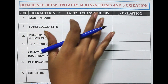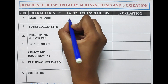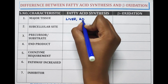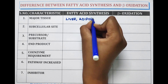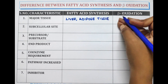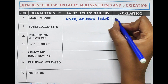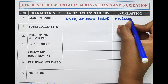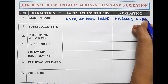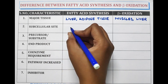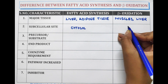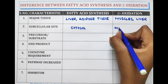Major tissue: fatty acid synthesis occurs mainly in the liver and adipose tissue, whereas beta oxidation is performed mainly in muscles and liver. The subcellular site for fatty acid synthesis is the cytosol, and for beta oxidation it is the mitochondria.